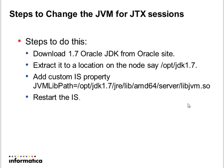You need to download a specific JVM version and extract it to some location. There is a file called libjvm.so — the main library component of your JVM. On my AMD64 machine, it is located in the JRE lib AMD64 server directory. This path will differ based on your hardware platform (e.g., SPARC). You need to set the JVM lib path as a custom IS property under the process tab — not as an environment variable. Then restart the integration service.